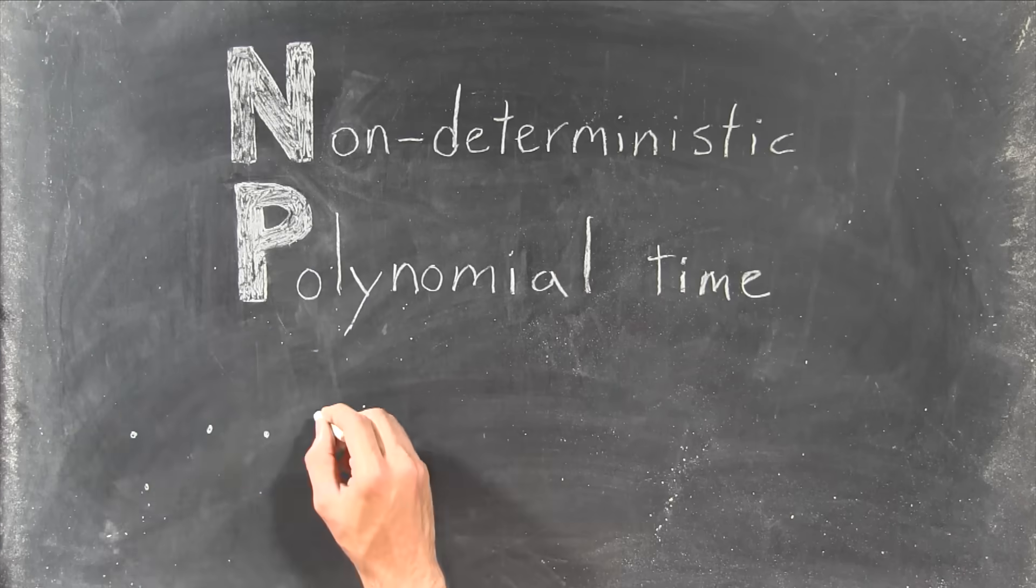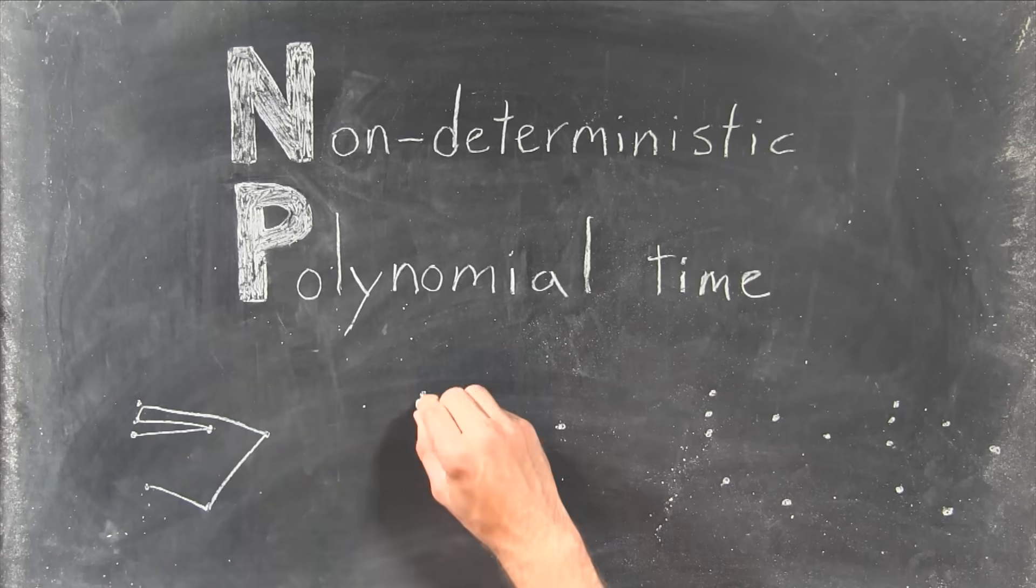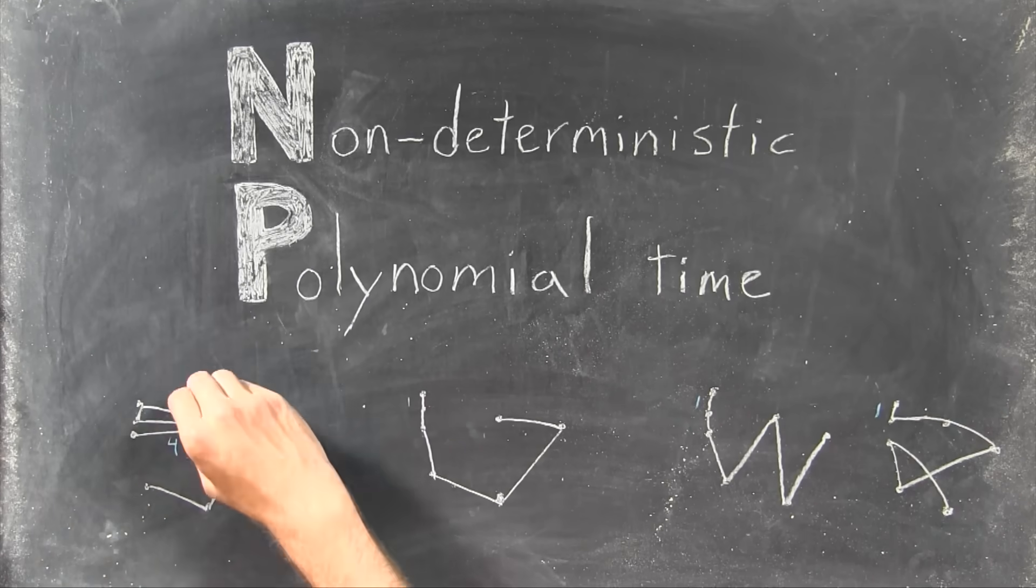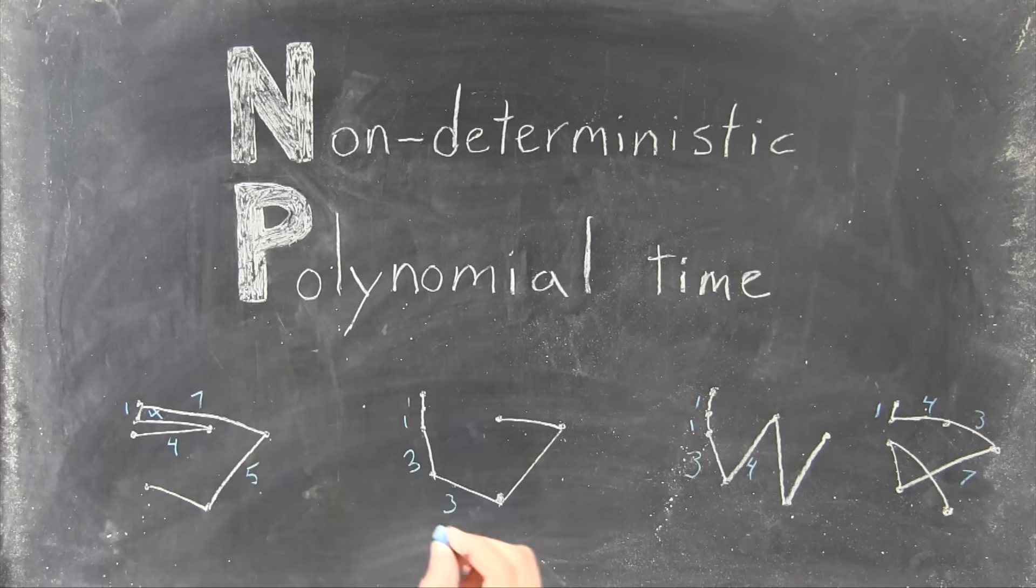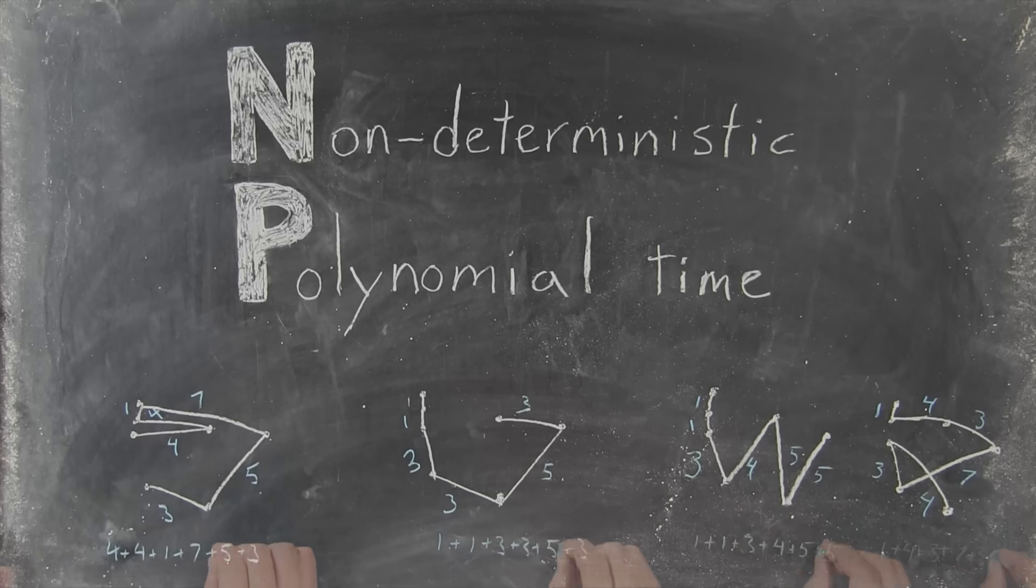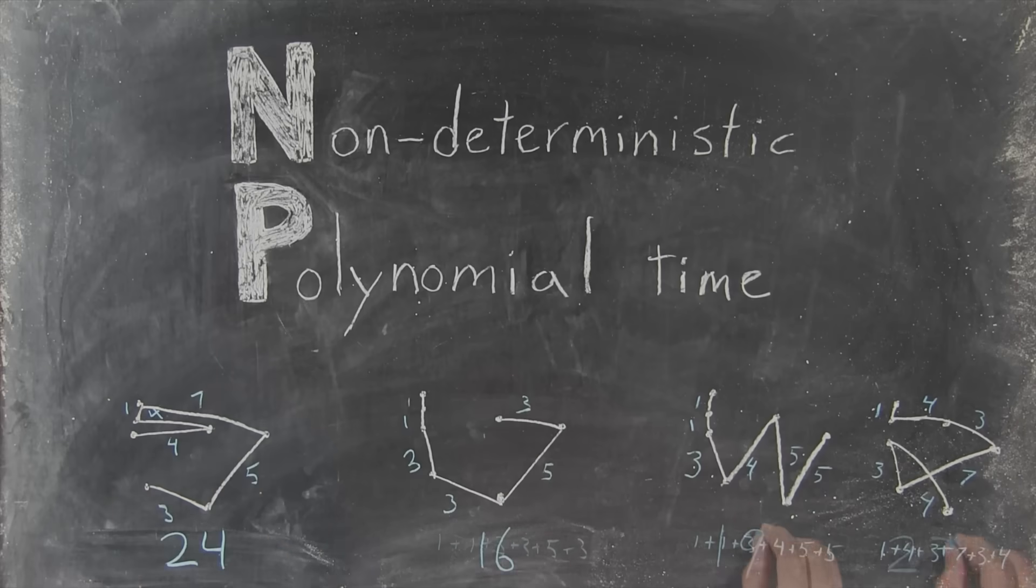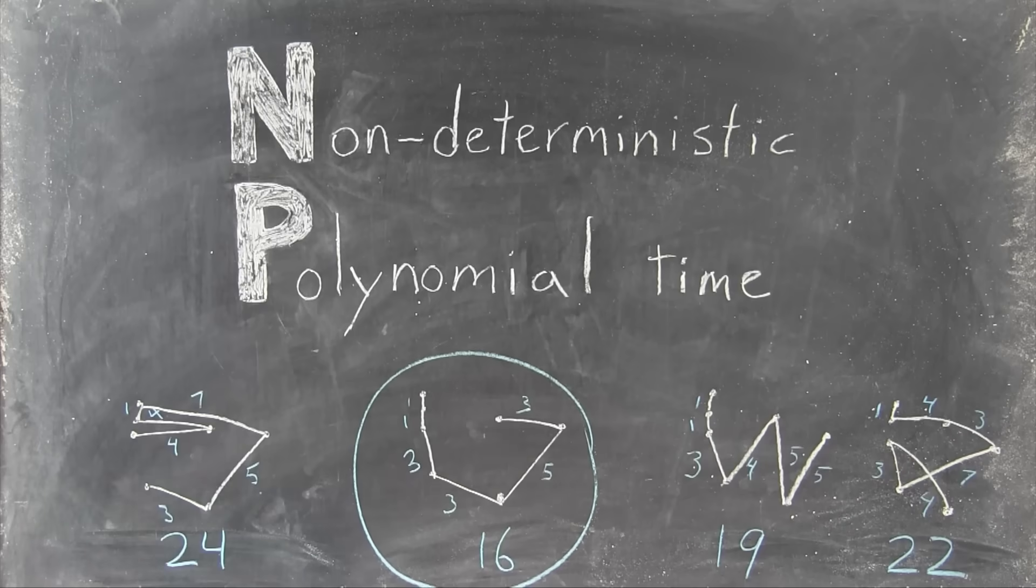NP is all about polynomial time checking. NP stands for non-deterministic polynomial time. Which, being math terminology, is an almost mean-spirited way of saying that if you had a bajillion computers and you could check all possible answers at the same time, you could find a correct solution in polynomial time.